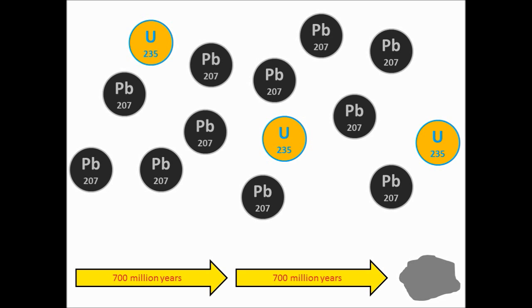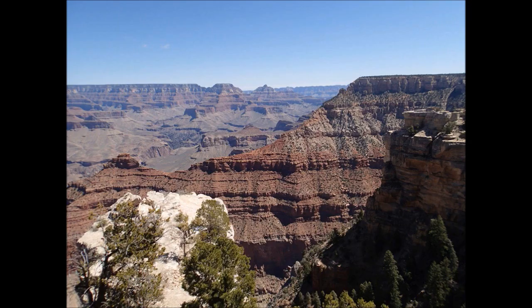So only 25% of the uranium-235 atoms will remain. We cannot predict when any one isotope atom will decay, but we know that on average half of them will over the course of that isotope's half-life. For any individual isotope atom, there is a 50% chance it will decay over the course of a half-life. With a large sample size, such as the billions and billions of atoms that make up the rock, this average has a margin of error between 2 and 5%, which is extremely precise.